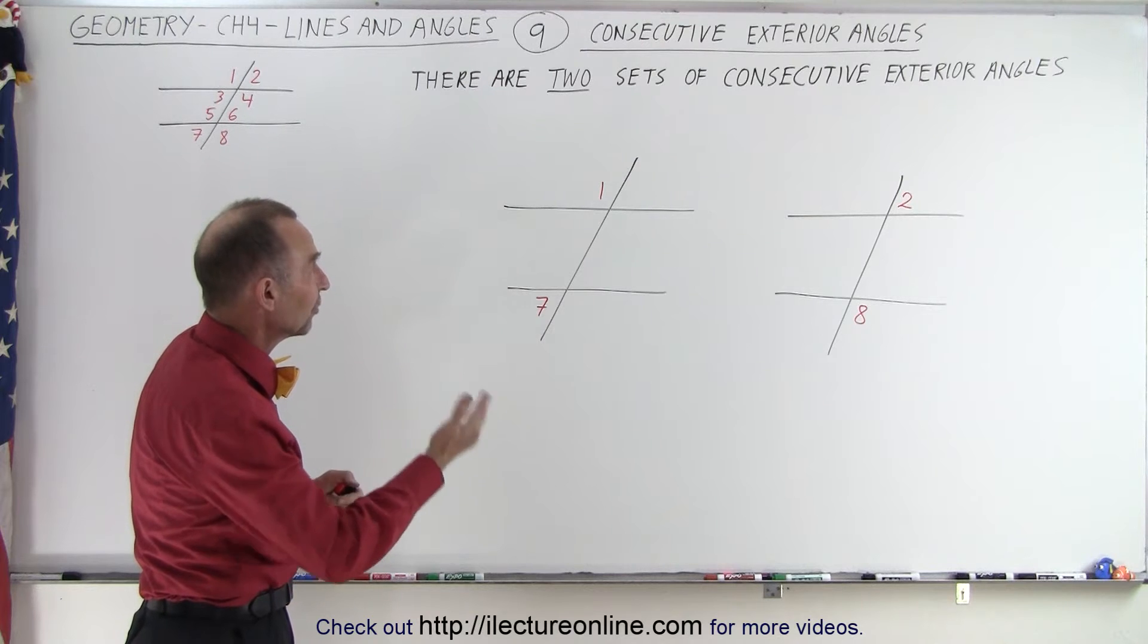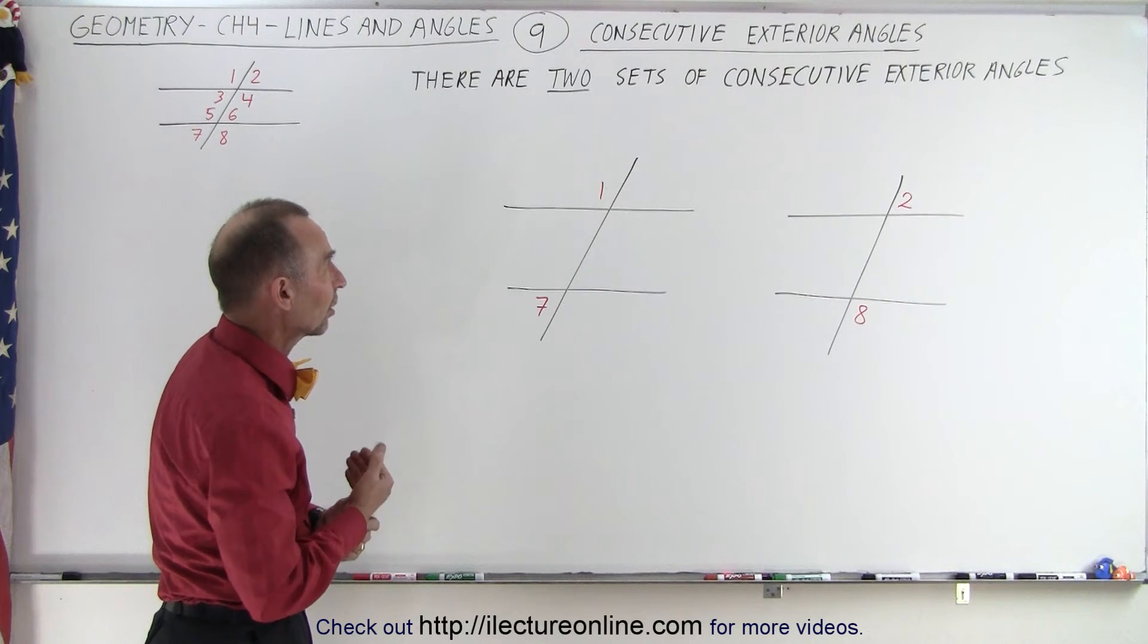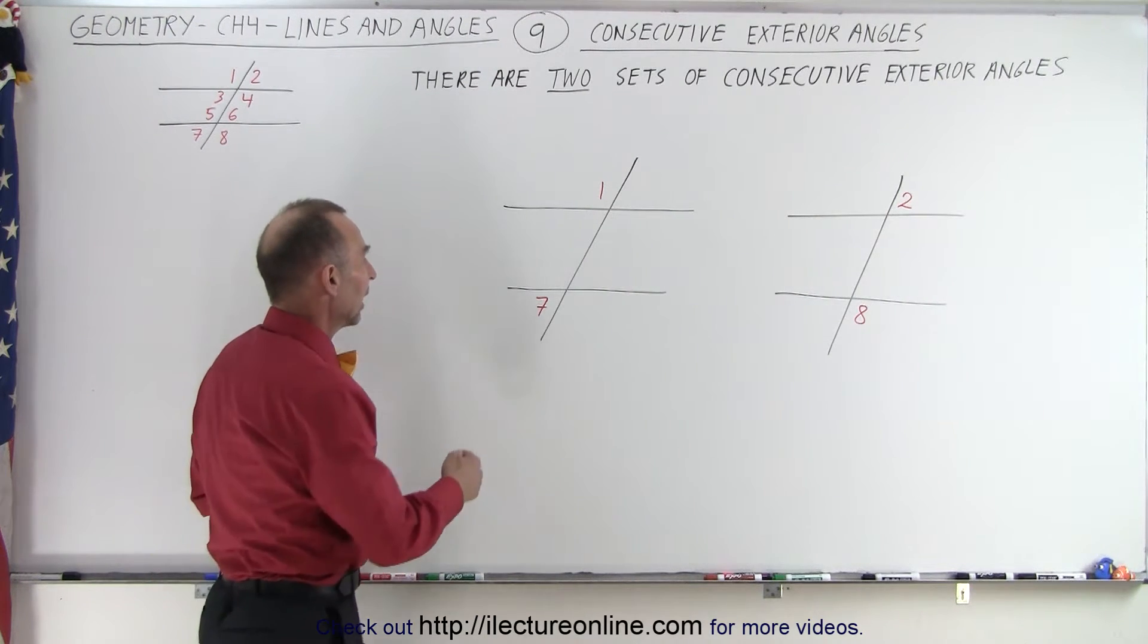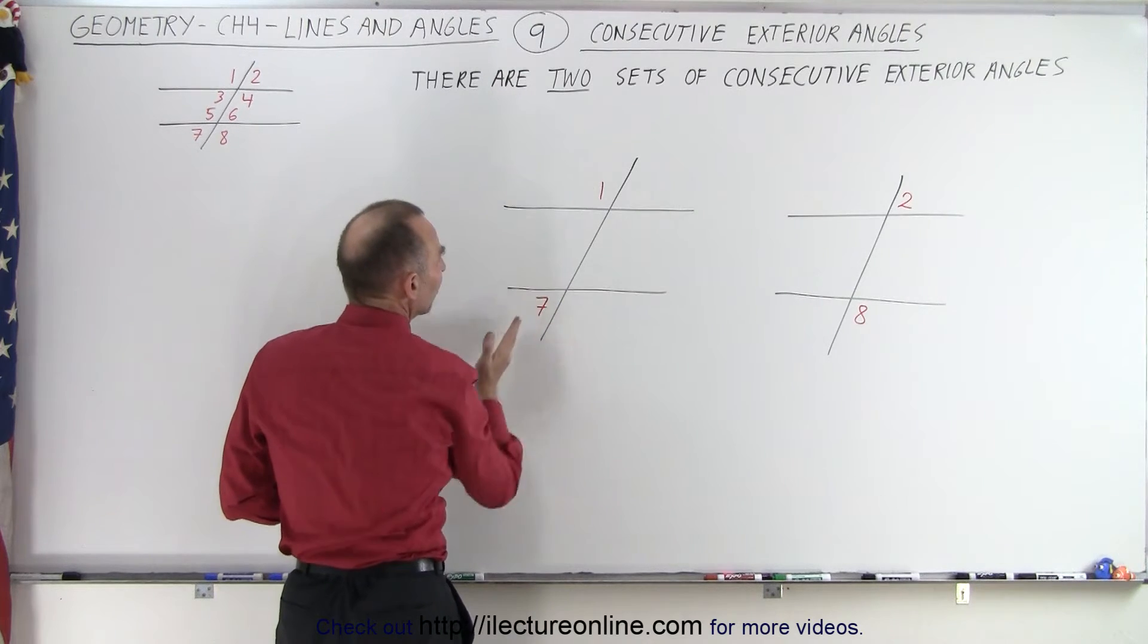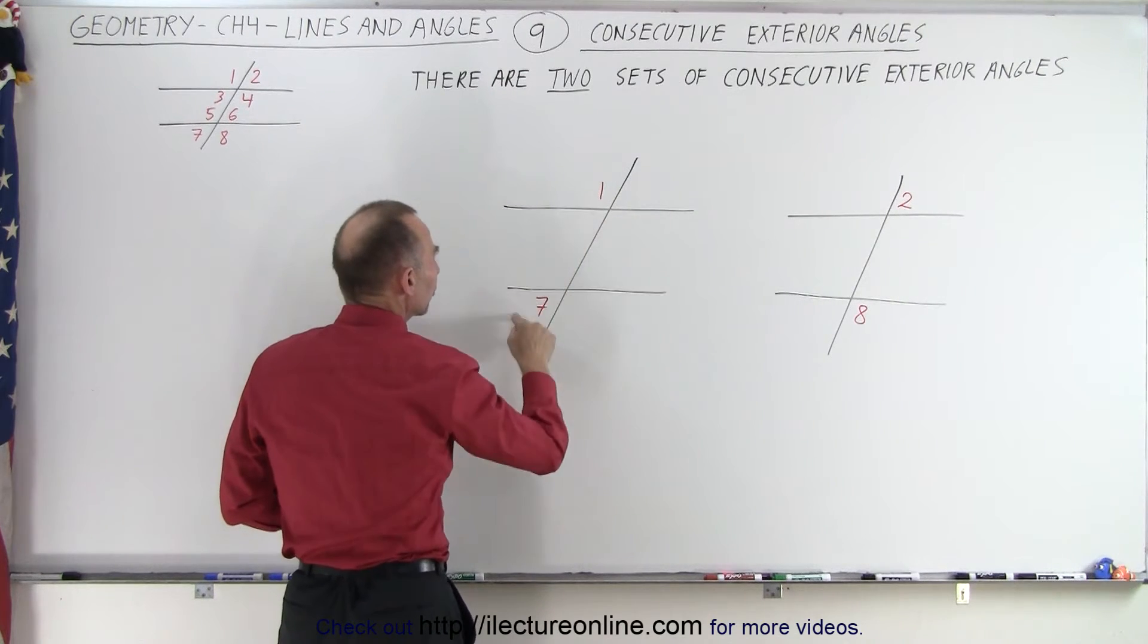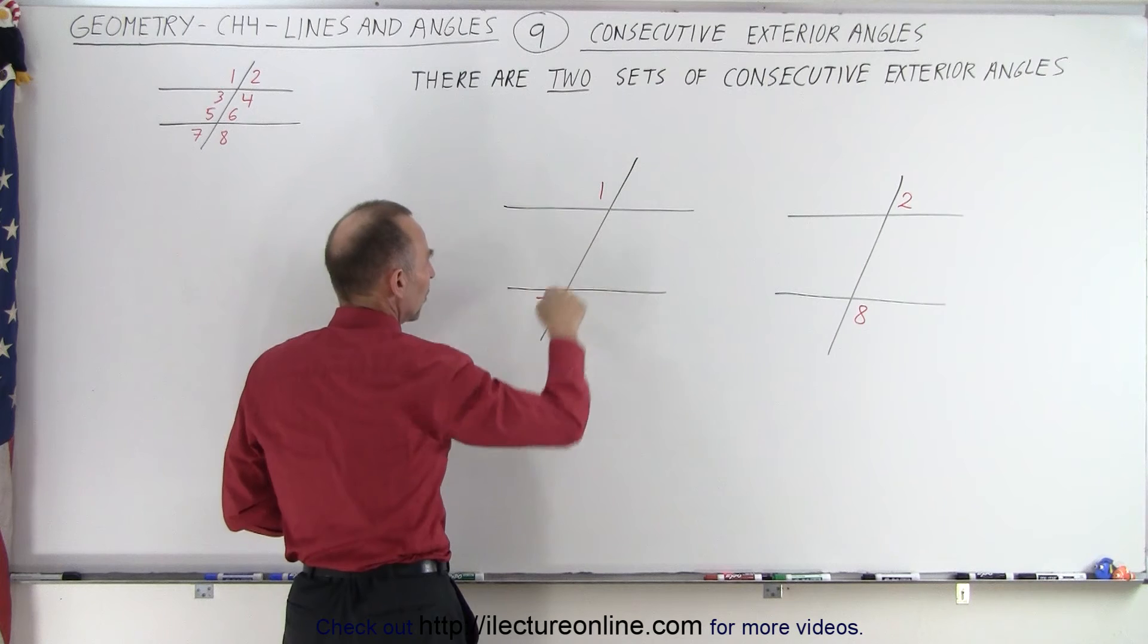There are two sets, just like consecutive interior angles. There are two sets of consecutive exterior angles, and notice they're on the same side of the transversal, exterior to the two lines that the transversal crosses.